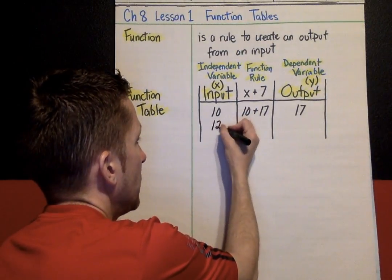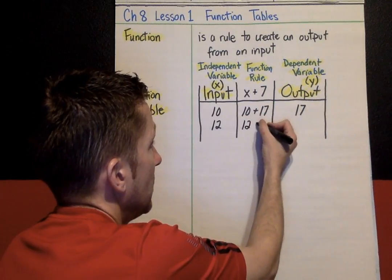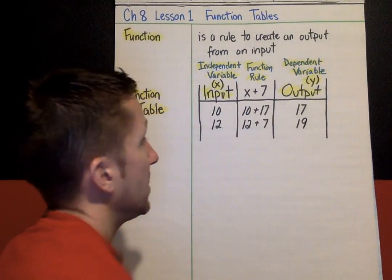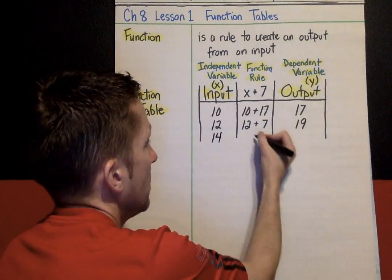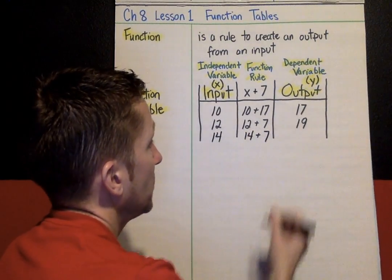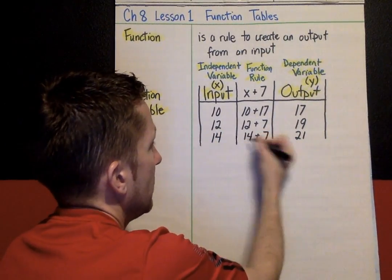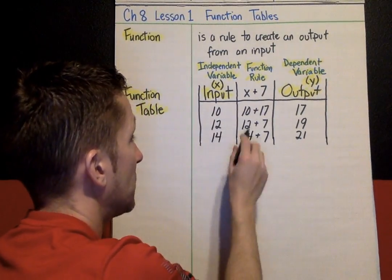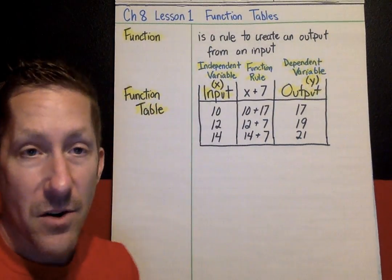What if we had an input of 12? We're just going to put in 12 into our function rule. 12 plus 7, output would be 19. If we had an input of 14, put it into our function rule, and our output would be 21. Again, straightforward. If you know the input, all you're doing is putting the input into the rule and seeing what you get as your output.